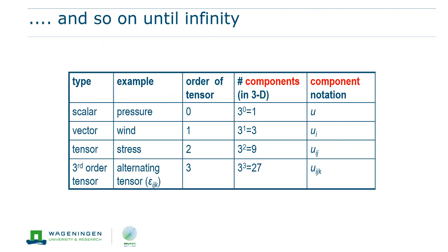Well, that is as far as the most frequently used tensors go. Up to order 2. But in the context of fluid mechanics there is at least one third order tensor that is worth mentioning, the alternating tensor. This tensor has 3 to the power 3. That is 27 elements.